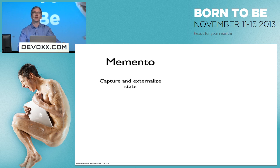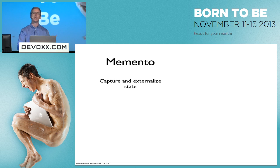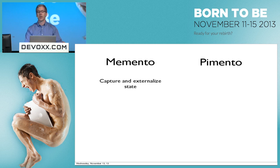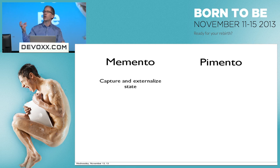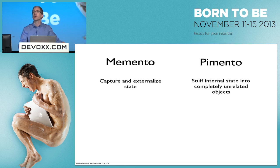There's the memento pattern — this is about capturing and externalizing state. Compared to that we have the pimento pattern. This comes from the olive with the pimento inside, in which we put internal state into completely unrelated objects.